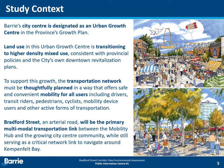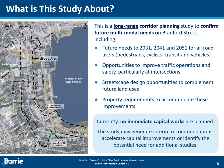To support this growth, the transportation network must be thoughtfully planned in a way that offers safe and convenient mobility for all road users, including drivers, transit riders, pedestrians, cyclists, mobility device users, and other forms of active transportation. This study is focused on long-range corridor planning to confirm future multimodal needs on Bradford Street. Multimodal transportation planning considers the needs of different road users to plan for and build a network that offers transportation options that are accessible and effectively integrated. This study is considering the future needs of active transportation users, transit, and vehicles over the next three decades.